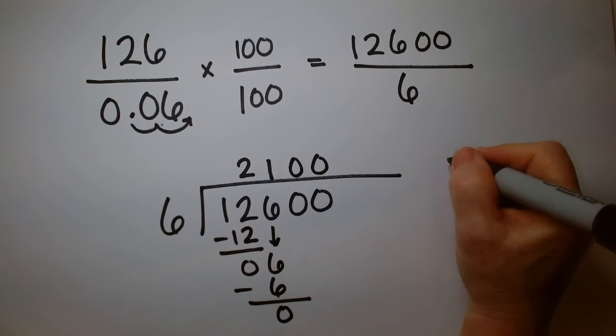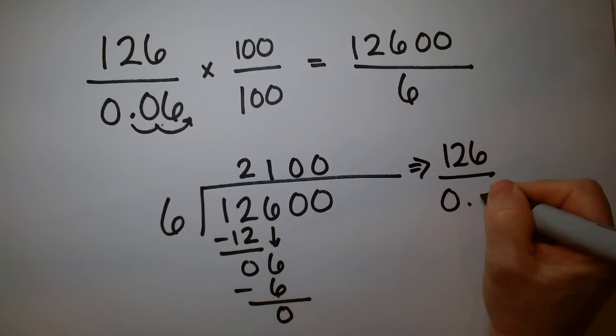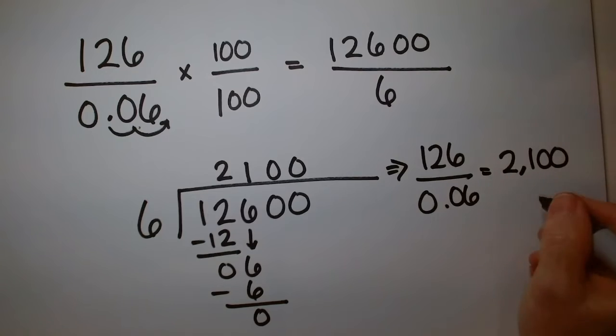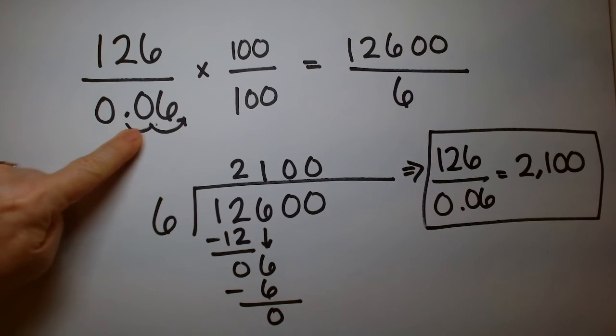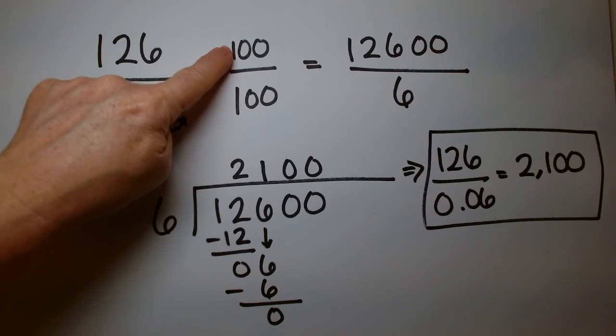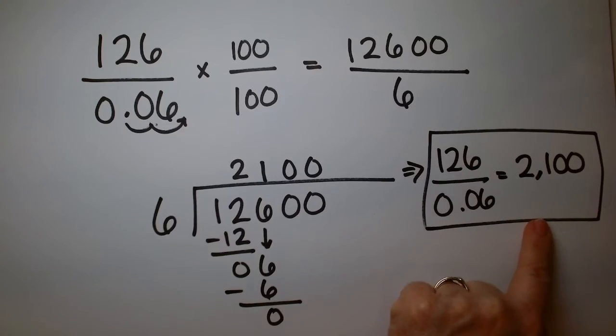So the answer to 126 divided by 0.06 is 2100. Notice you have to first multiply this out so it becomes a whole number. Whatever you multiply on the bottom, make sure you do on the top. Then just do your regular long division to get your final answer.